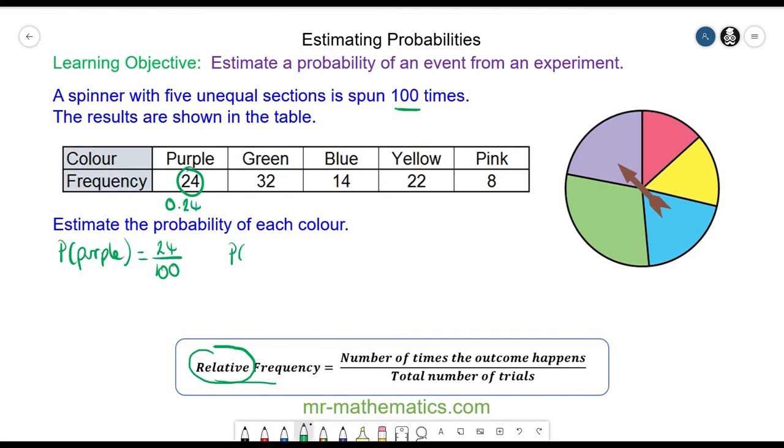The probability of a green: it happens 32 times and the total number of trials is still 100. So this is 0.32.